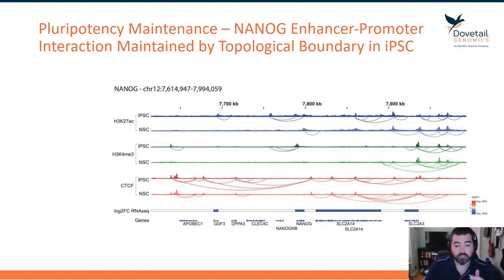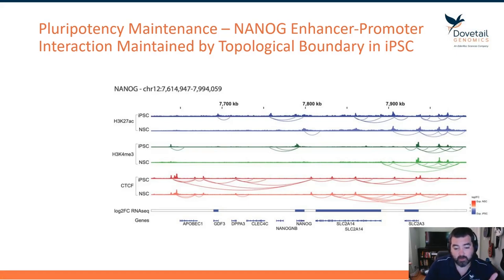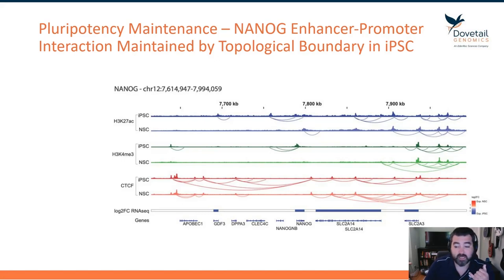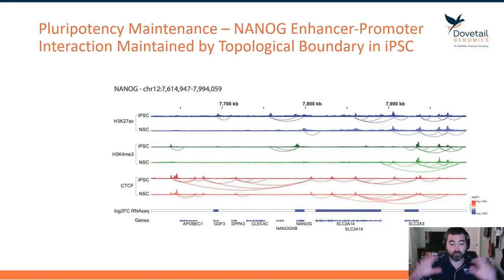The first two tracks in this plot are H3K27 acetylation — the enhancer marks. Below that in green, we have H3K4 trimethylation marks for the active promoters. Then we have CTCF peaks in red, and below that, the log fold change of gene expression. Where you see blue blocks, those are genes more expressed in iPSC cells than in NSC cells.